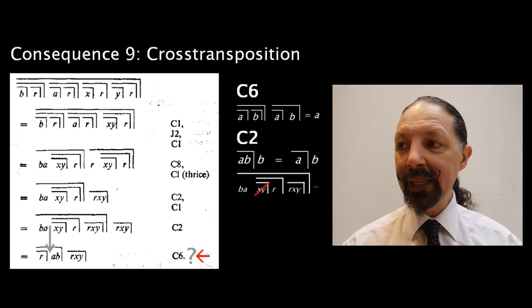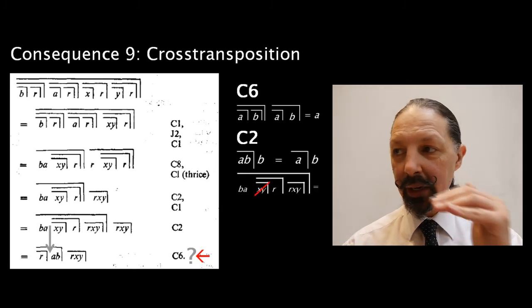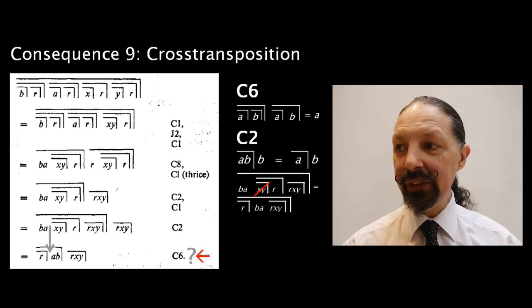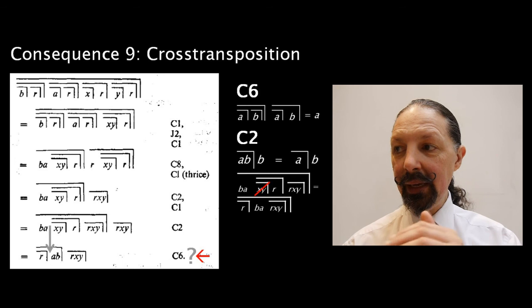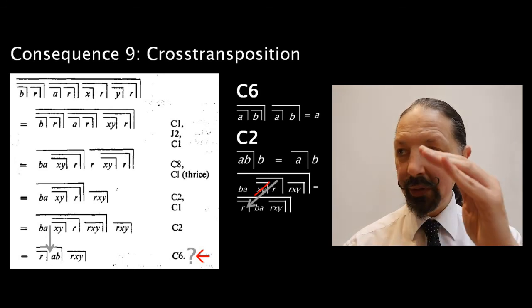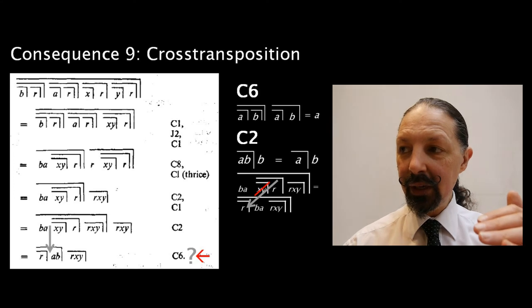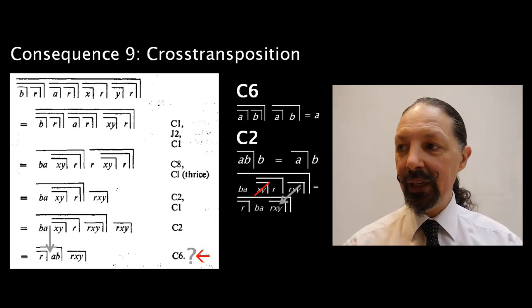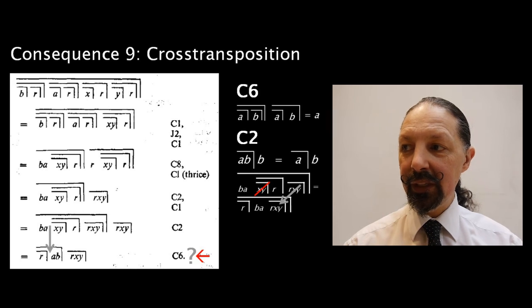Well, we can take the XY under a mark out because it's already on the outside. So that gives us R mark, BA, RXY mark over 3 with a mark over them. That R has moved to the left, the BA has moved to the centre, and the RXY mark over 3 has stayed where it is, all under an overarching mark.